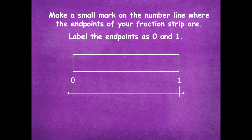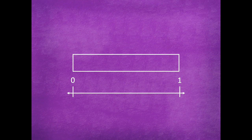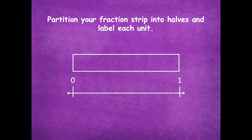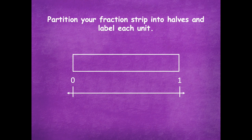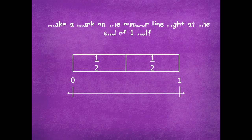Now you're going to partition your fraction strip into halves and label each unit — you know how to do this, split it into halves and label the unit fraction. In halves there are two equal parts, so each one is one half. Then make a mark on the number line right at the end of one half — one half is right in the middle, so that's where you draw your line on the number line. Pause the video, do that, then click play.